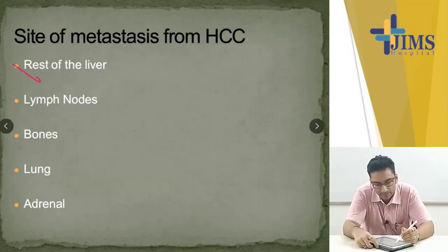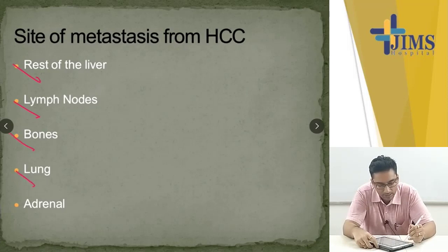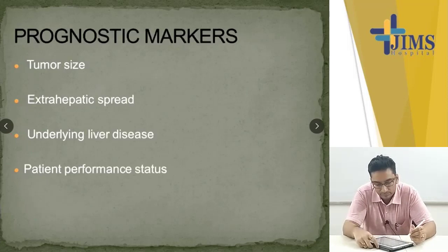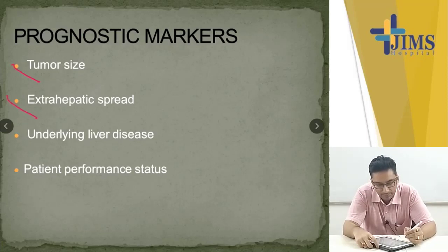Sites of metastasis include the rest of the liver, lymph nodes, bones, lungs, and adrenal glands. Prognostic markers are tumor size, extrahepatic spread, underlying liver disease, and patient performance status.